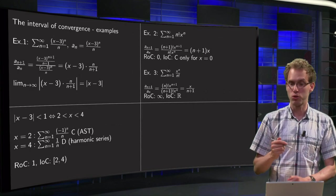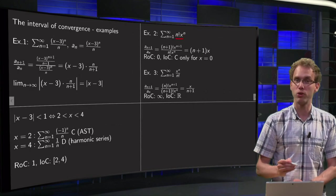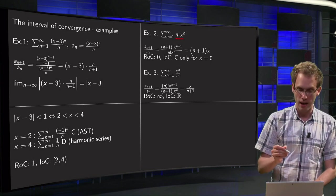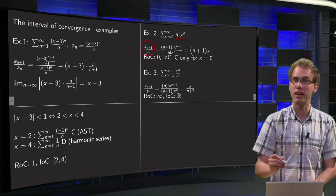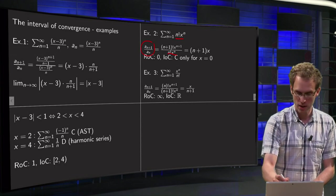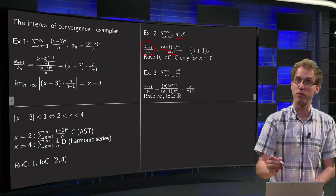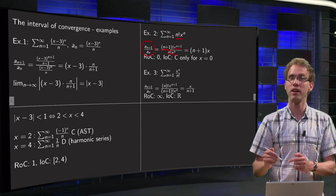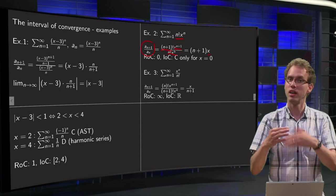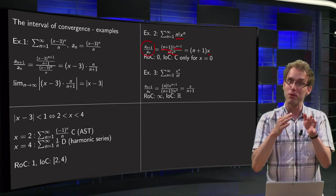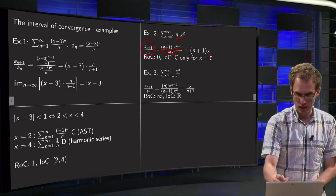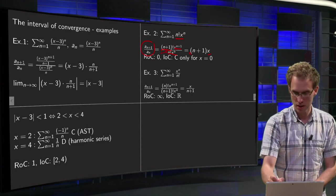Second example, oh that looks awkward. n factorial times x to the power n, so those terms will grow a lot. Well, let's compute a_{n+1} over a_n, so we will do our ratio test again. Our a_n is just n! times x^n, for a_{n+1} we have (n+1)! times x^{n+1}, so x^{n+1} divided by x^n gives us a factor x, something which will always happen, and (n+1)! equals (n+1) times n!, so the n factorials cancel out and we are left with (n+1).